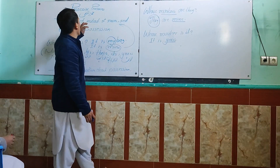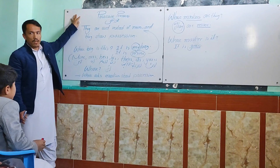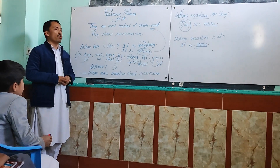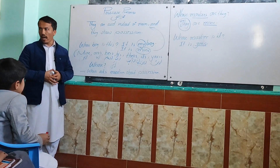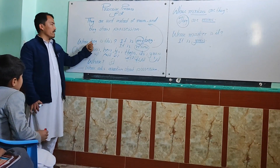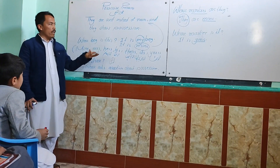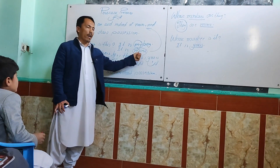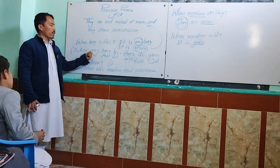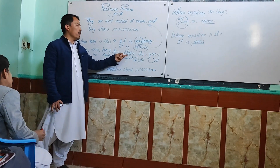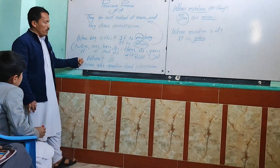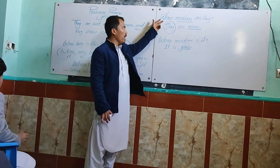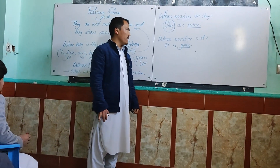Let's recap. Possessive pronouns are used instead of nouns and they show possession. For example, 'Whose bag is this?' — 'It's my bag,' or instead of 'my bag' we use the pronoun: 'It's mine.' The pronouns are: mine, ours, hers, his, theirs, its, yours. 'Whose' asks a question about possession — for example, 'Whose markers are they? They are mine.' 'Whose marker is it? It's yours.'